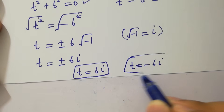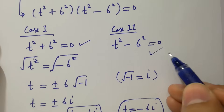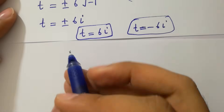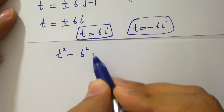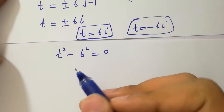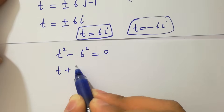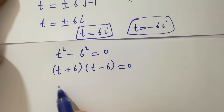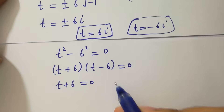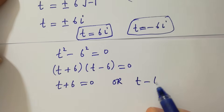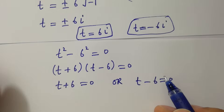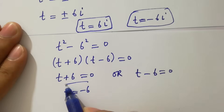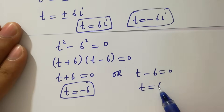Now taking the second case: t square minus 6 square equal to 0. Applying a square minus b square equal to a plus b times a minus b, we get t plus 6 times t minus 6 equal to 0. Either t plus 6 equal to 0 or t minus 6 equal to 0. So we have t equal to minus 6 and t equal to plus 6.